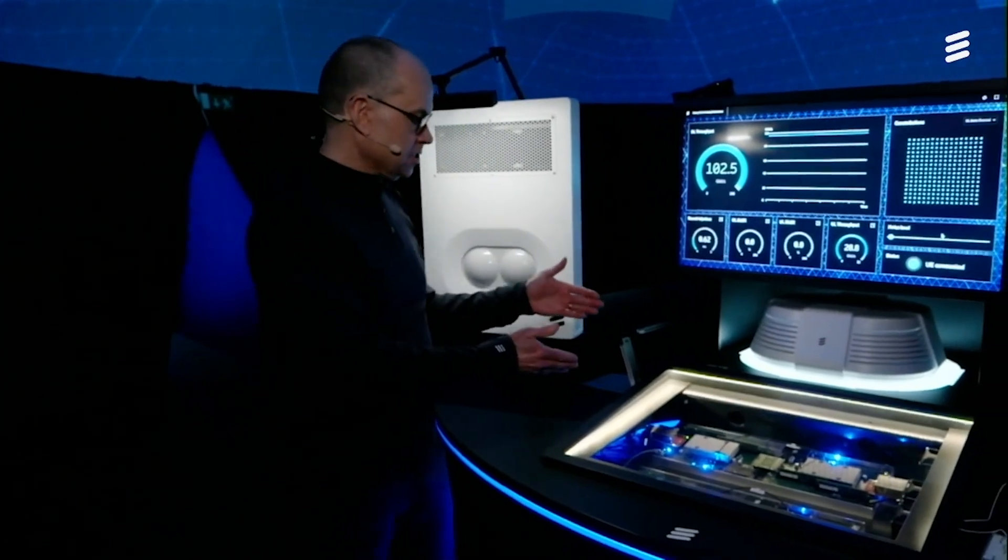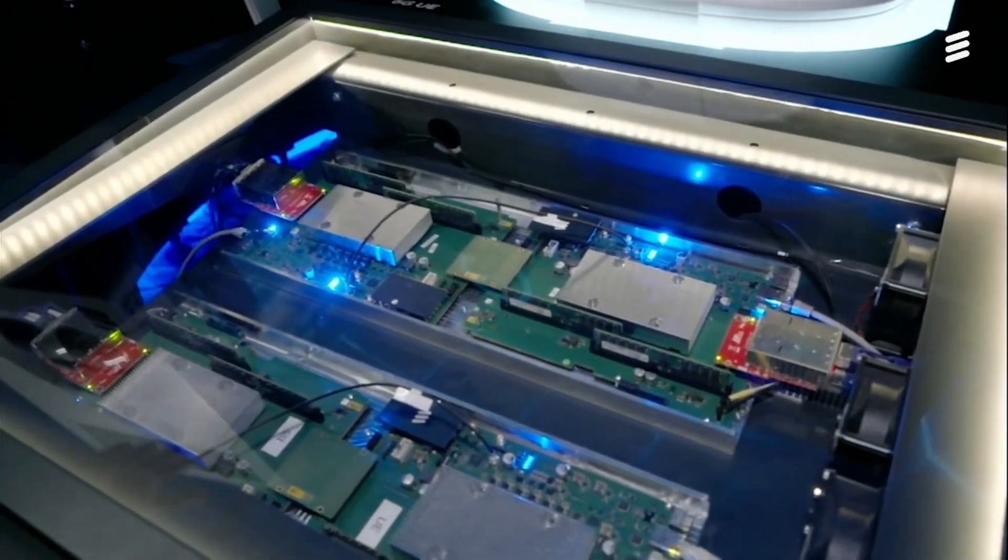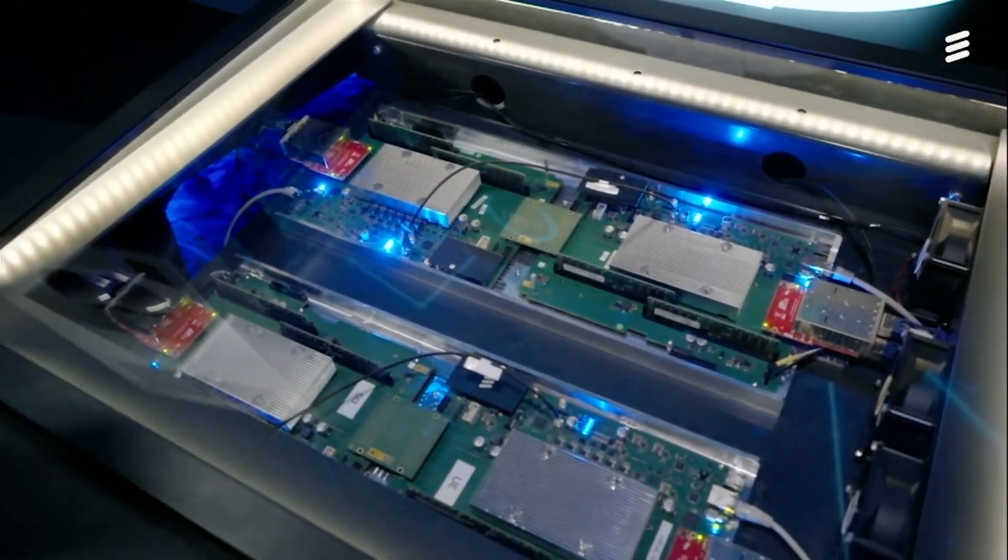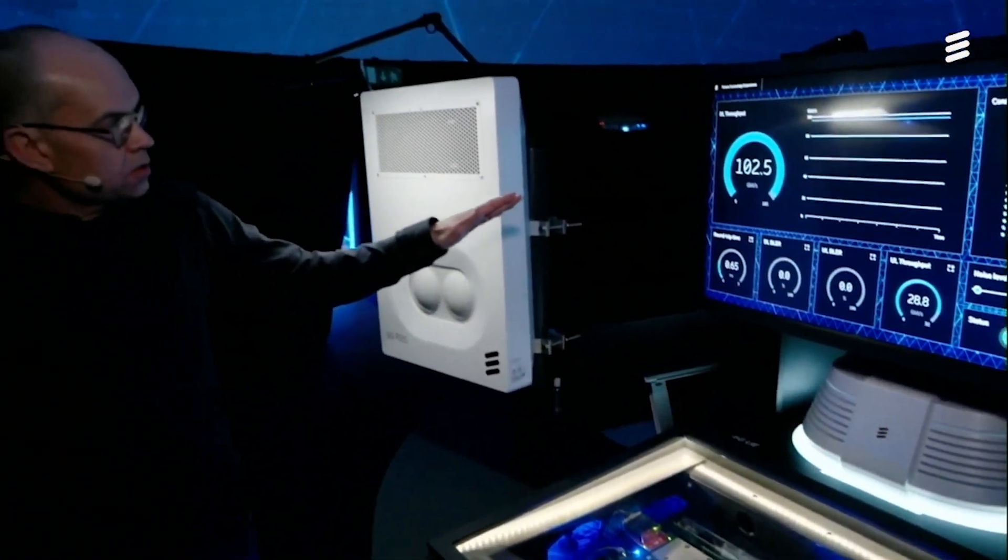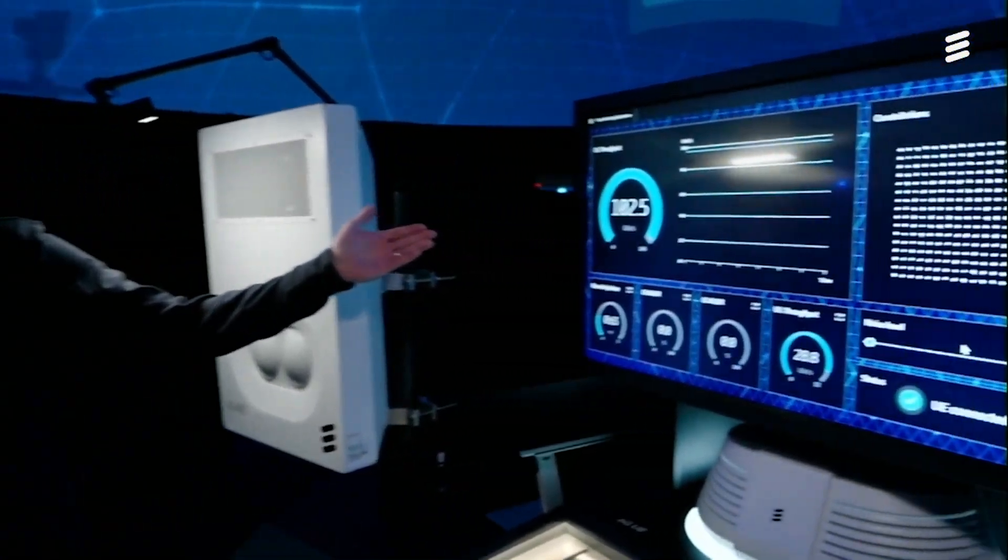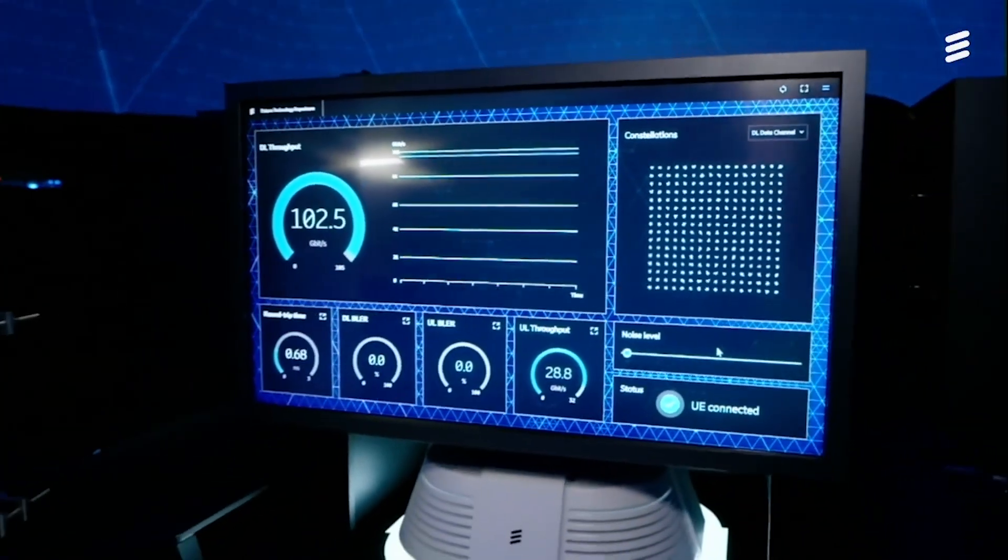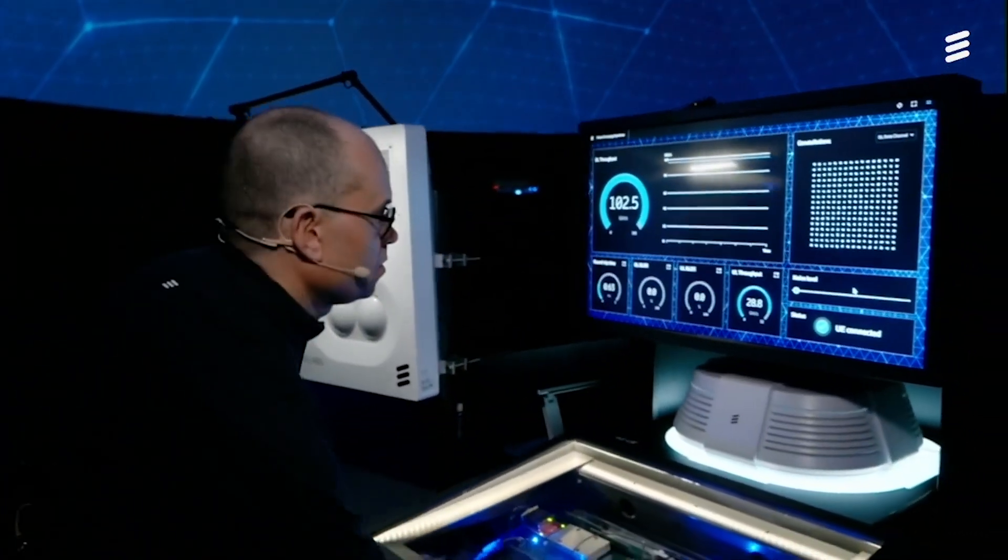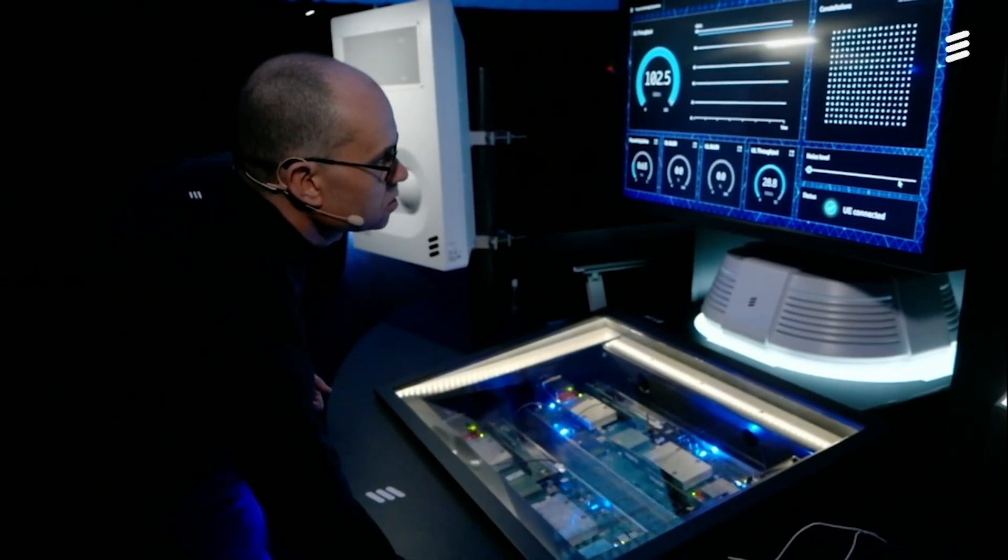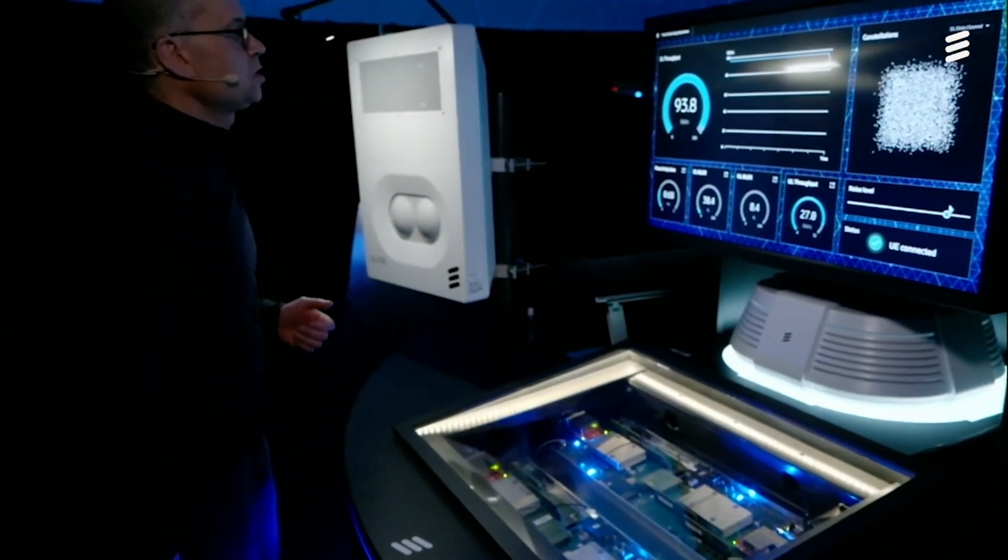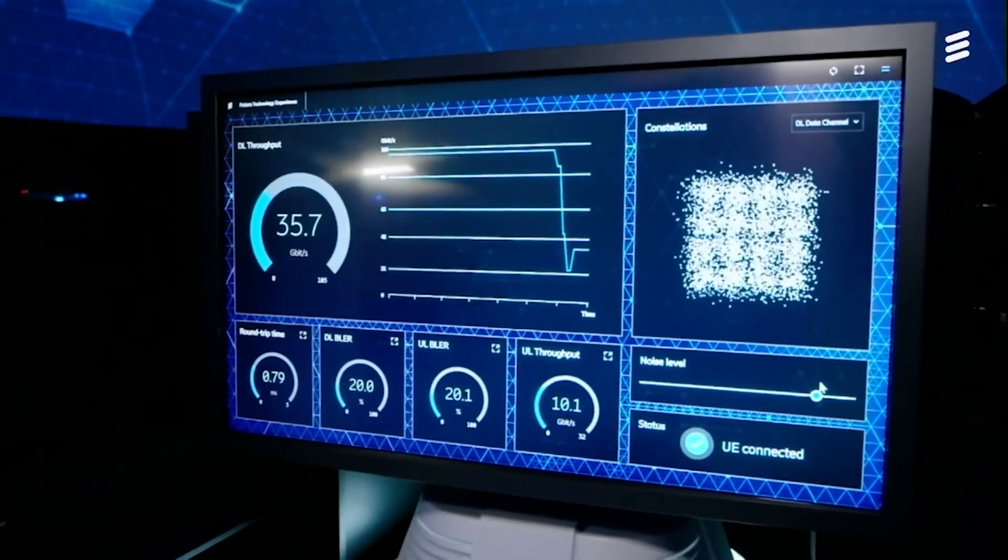So here we have digital radio boards running here live, as you can see. And at this point we have throughput, as you can see here on the screen, of beyond 100 gigabits per second. And I can show you here also that we have implemented link adaptation. So if we introduce noise, first of all, you will see that the throughput goes down a bit and the system adapts.